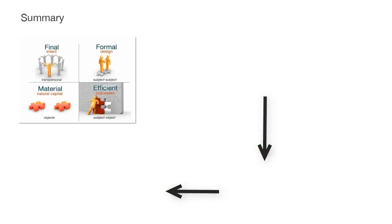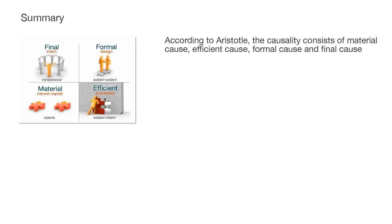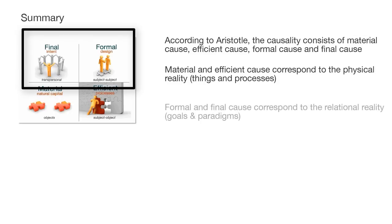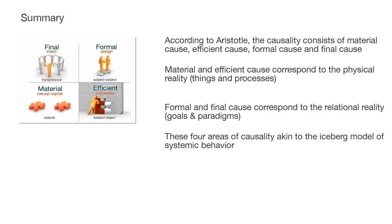Let's summarize. According to Aristotle, the causality consists of material cause, efficient cause, formal cause, and final cause. Material and efficient cause correspond to the physical reality, which are things and processes. Formal and final cause correspond to the relational reality, akin to goals and paradigms. These four areas of causality are similar to the iceberg model of systemic behavior.